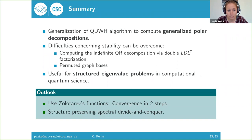Let me summarize my talk. We were interested in generalizing the QDWH algorithm for computing generalized polar decompositions. This worked quite nicely, but there were some difficulties concerning stability, which we managed to overcome by computing the indefinite QR decomposition via a double LDLT factorization or by using permuted graph basis. This is useful for structured eigenvalue problems in computational quantum science, where these polar decompositions can be used to reduce the number of dimensions.